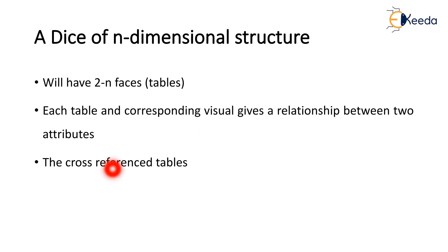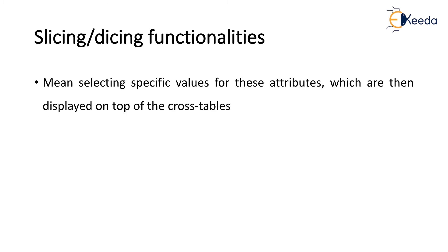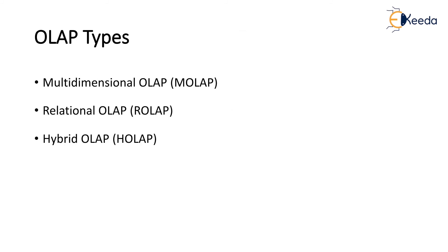The slicing and dicing functionalities involve selecting specific values for attributes, which are then displayed on top of the cross tables. Slicing shows a data relationship in analyzed multi-dimensional data, while dicing can be viewed with variable values in multiple dimensions. There are three types of OLAP: Multi-dimensional OLAP (MOLAP), Relational OLAP (ROLAP), and Hybrid OLAP (HOLAP).